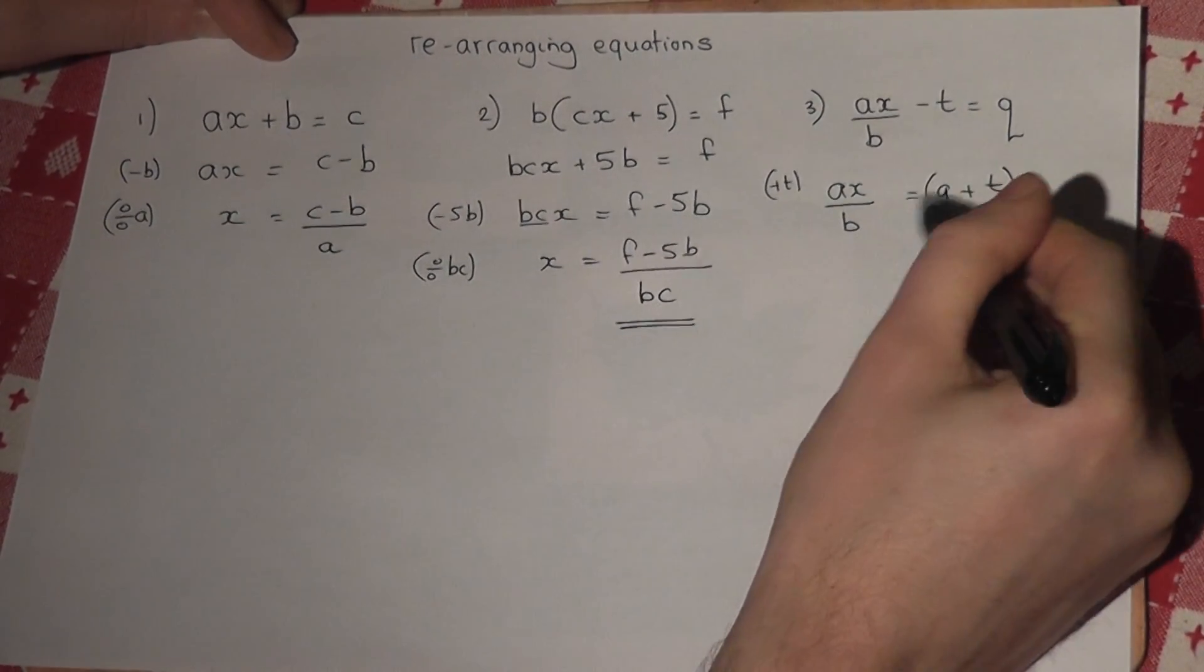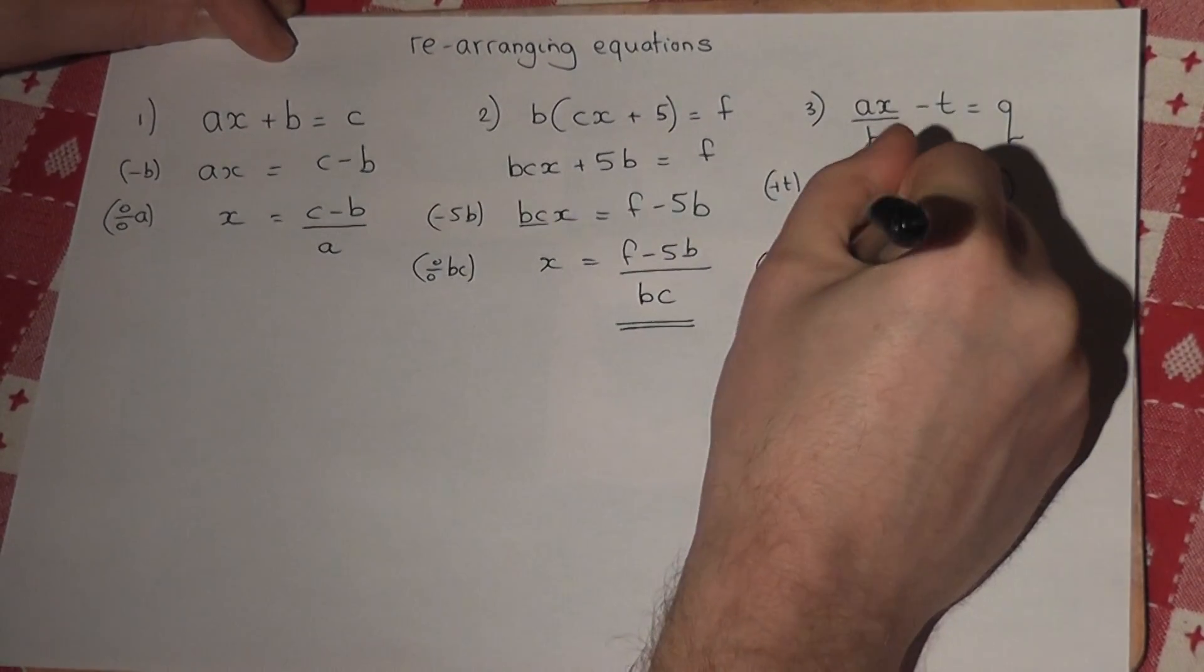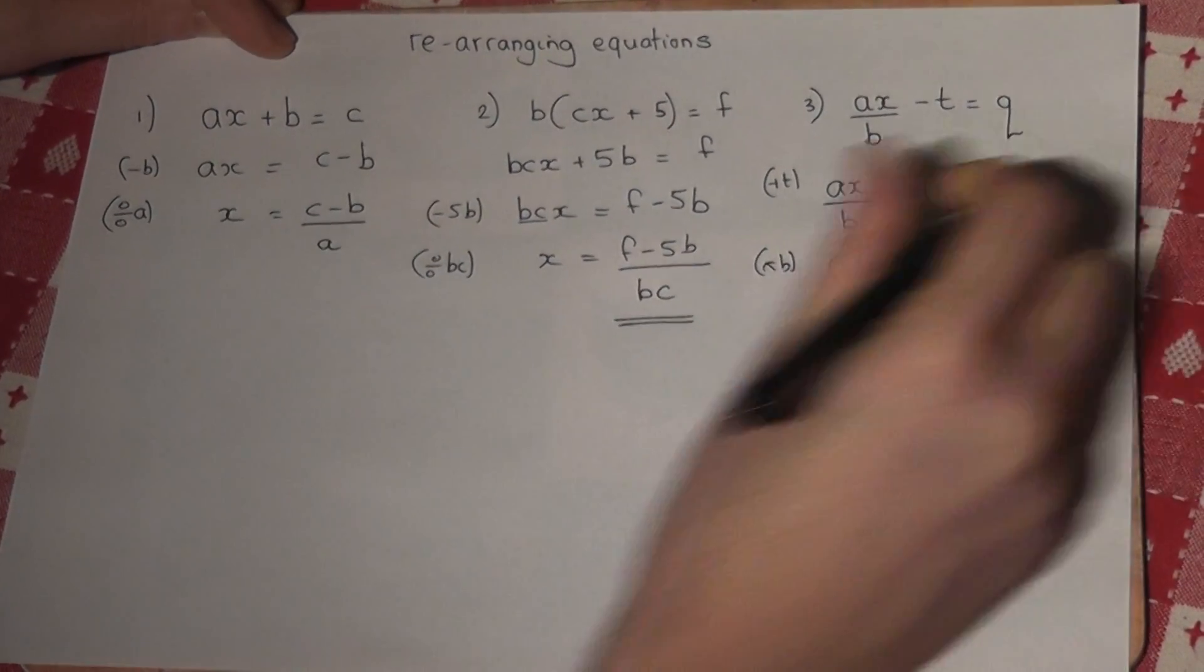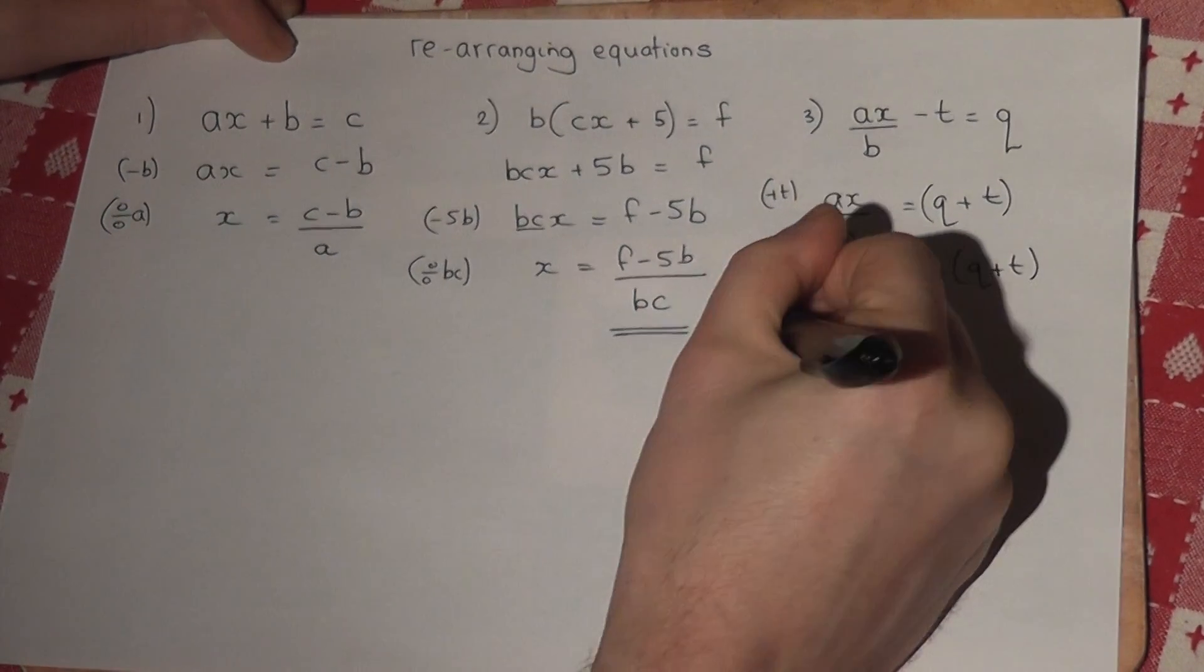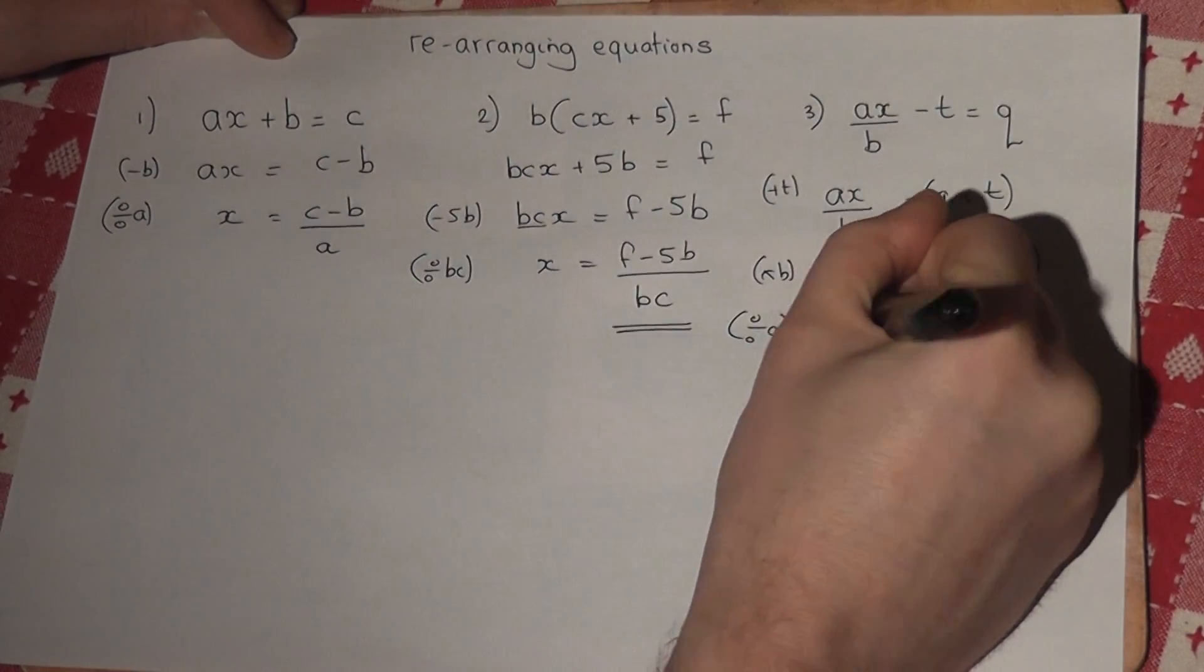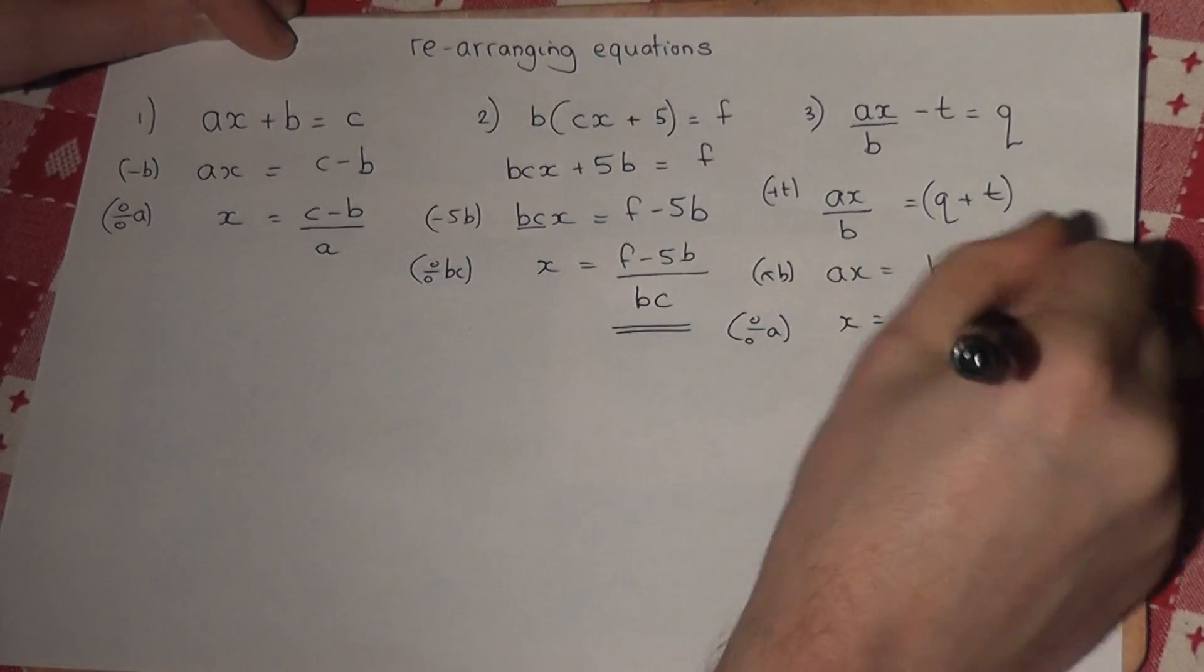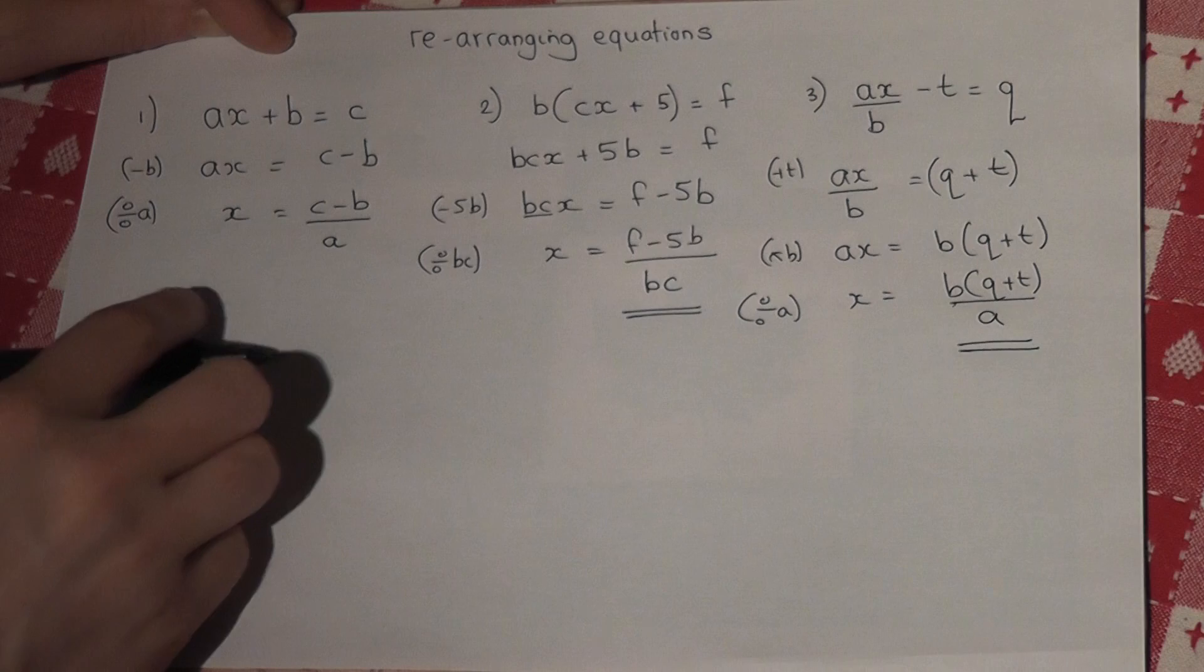So if I times by b, ax just equals b lots of q plus t. I don't now need to expand the bracket. I just need to divide by a. So x just equals b(q plus t) all over a. And there we are. X has been made the subject.